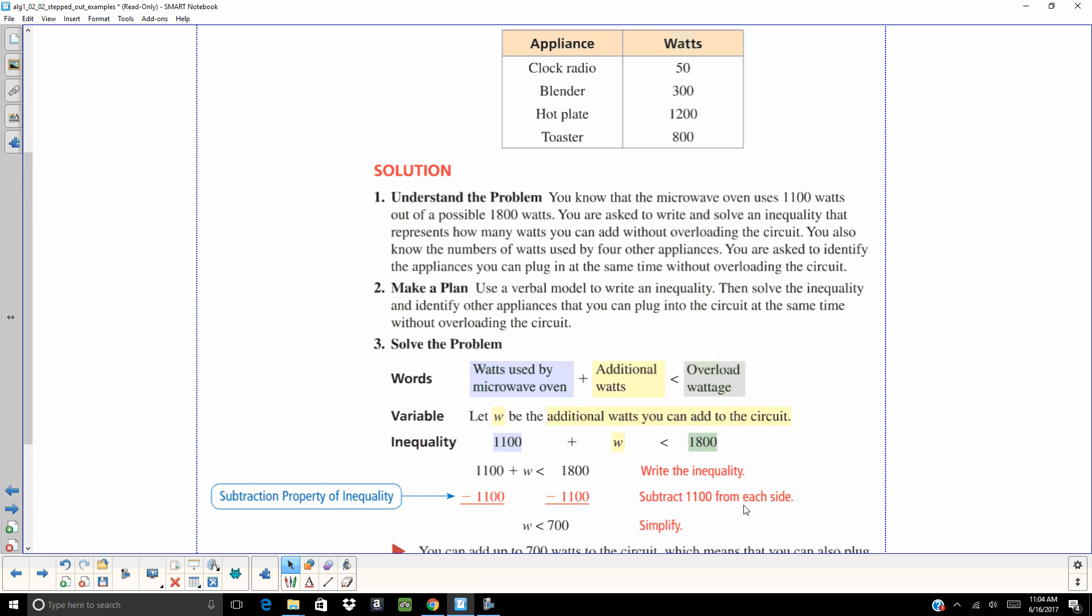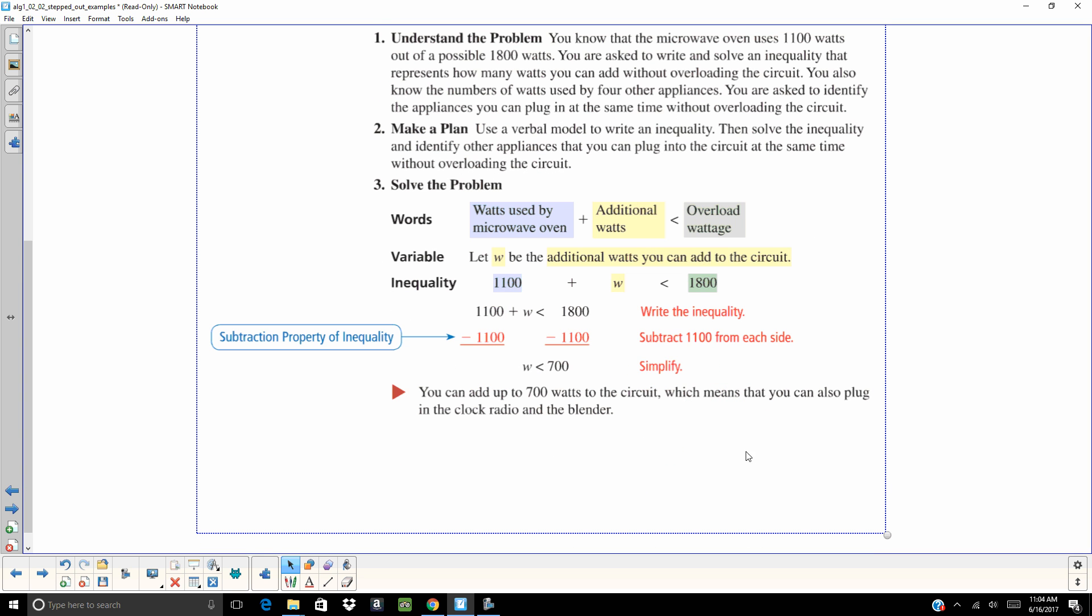So we look back up here. Well, what could we use? We can't use the toaster, we can't use the hot plate. We could use the radio and the blender. Does that make sense? Yeah, it does.